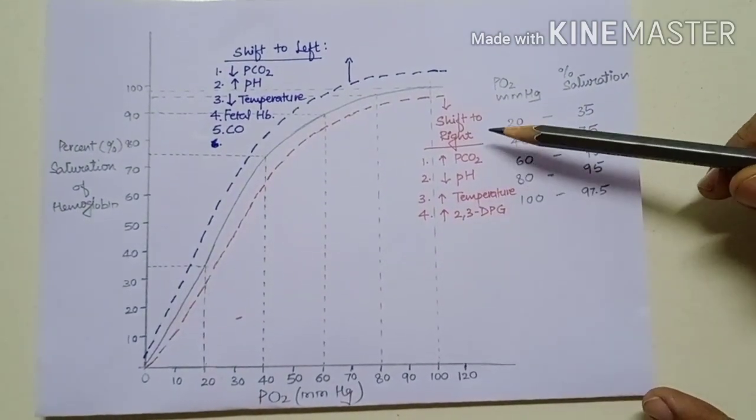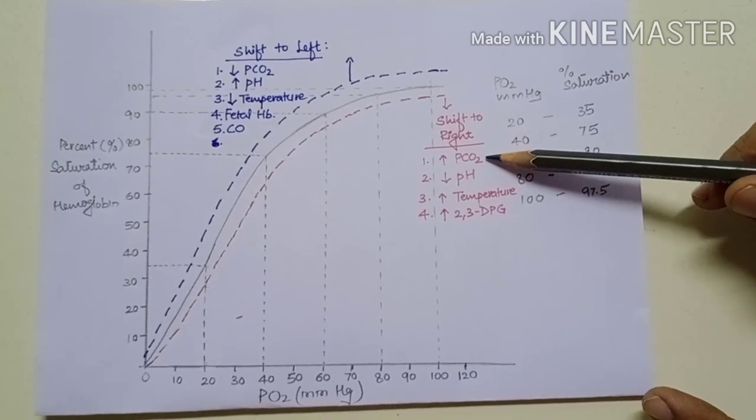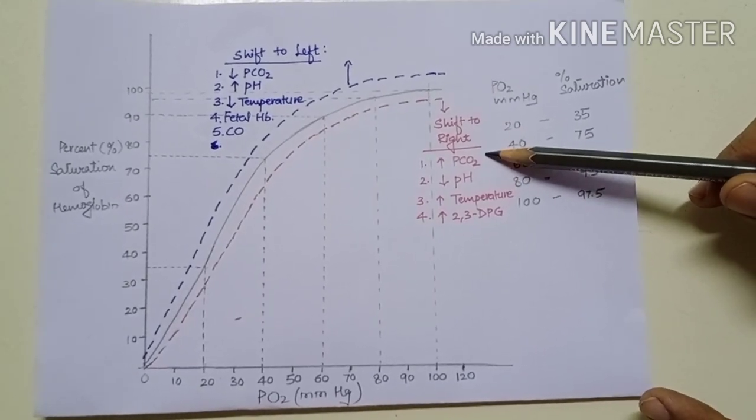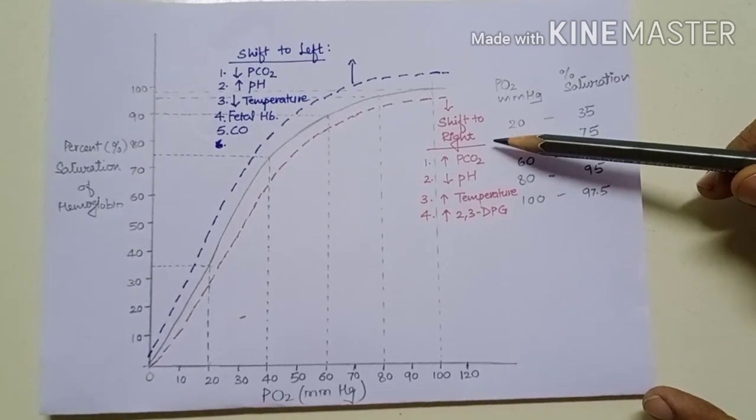Factors that cause shift to right: when there is an increase in the partial pressure of carbon dioxide, there is a shift to right.